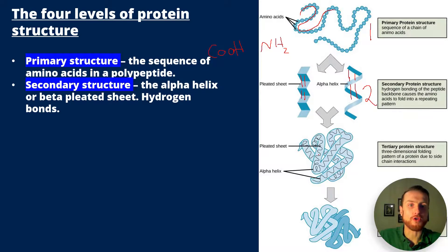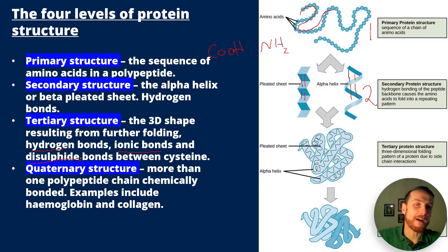The tertiary structure is where we have a 3D shape resulting from further bonding, including hydrogen bonds, ionic bonds, and disulfide bonds between the amino acid cysteine because that contains sulfur in its variable region. Finally, we have the quaternary structure, which is when we have more than one polypeptide chain chemically bonded. Examples include hemoglobin, which has four polypeptide chains, and collagen.